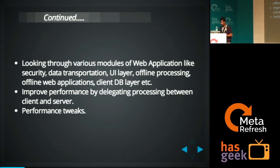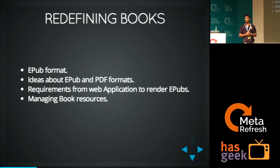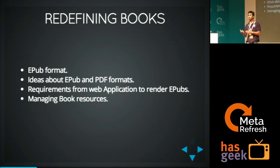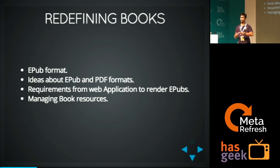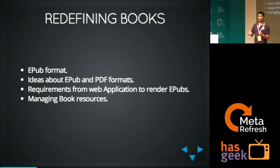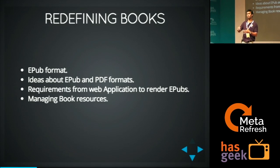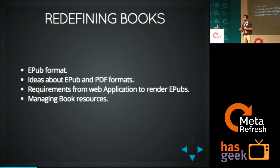Starting with e-books: e-books basically use EPUB plus PDF formats. EPUB is something like a zip file — it contains all the HTML, images, CSS, and other resources. It's just like a web page that is local to your machine; you click on an index.html page and it references all resources from there. EPUB is mostly like that.